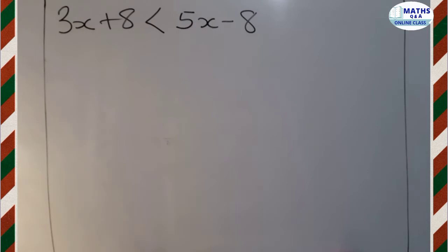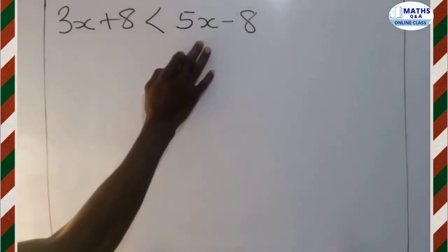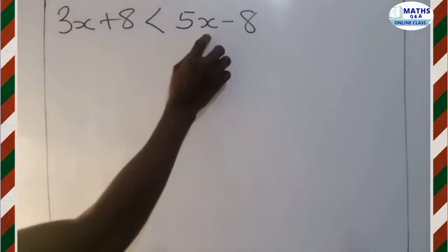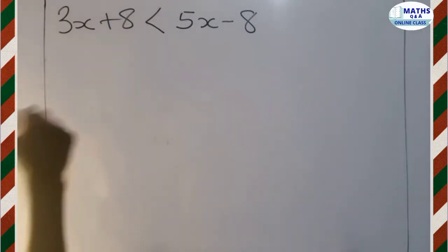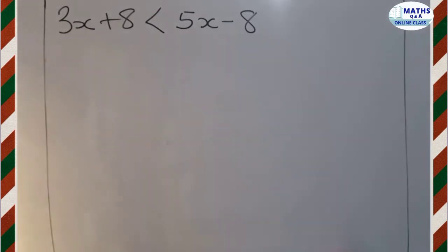Now, you see that we have coefficient of x in this question. That is 3 and 5. 3 is multiplying x. 5 is multiplying x here. And then we have constant numbers. That is 8 and then negative 8.